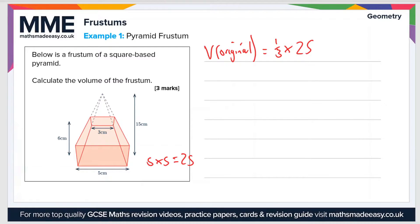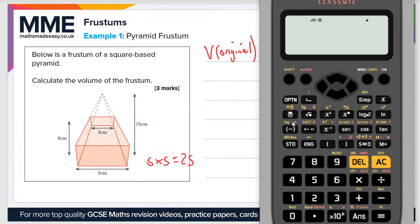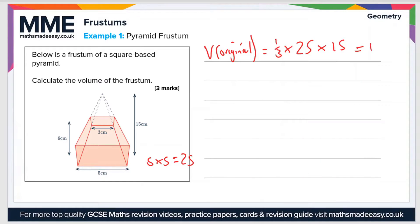So the area of the base is 25, times the height which is 15 centimeters. If we plug that into a calculator we get one-third times 25 times 15, which gives us 125 centimeters cubed. That's the volume of the original pyramid.